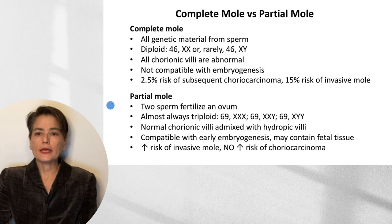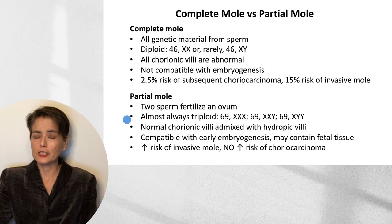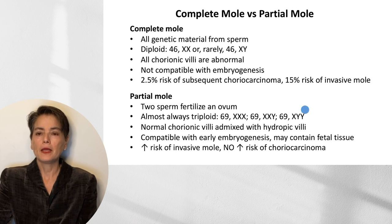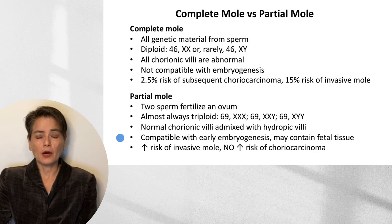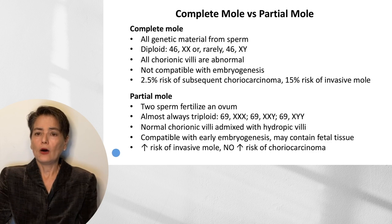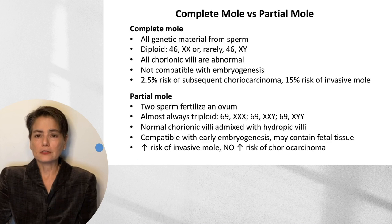With a partial mole, two sperm fertilize an ovum, resulting in a triploid lesion — typically XXX or XXY, much less commonly XYY. In contrast to the complete mole, we will have not only hydropic swollen villi but also admixed normal chorionic villi. This is compatible with early embryogenesis, though not with a term pregnancy, and we may identify fetal tissue. While there is an increased risk of invasive mole with partial moles, there is no increased risk of choriocarcinoma.